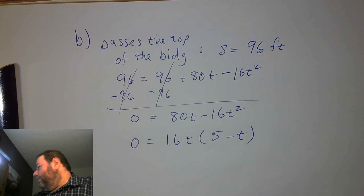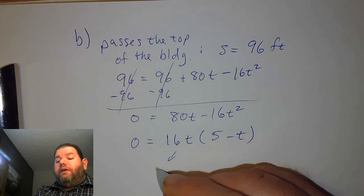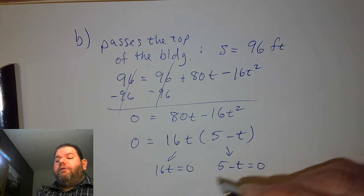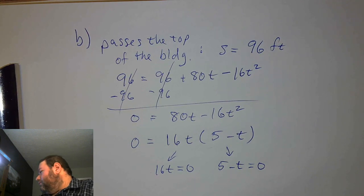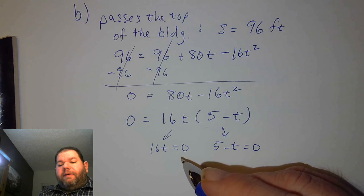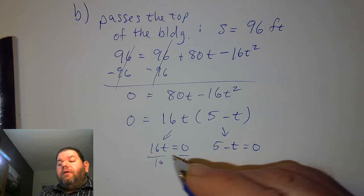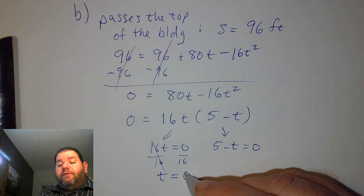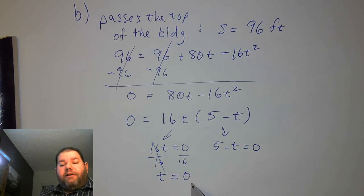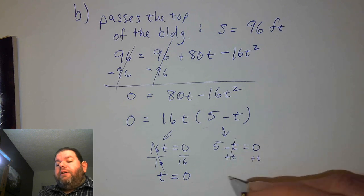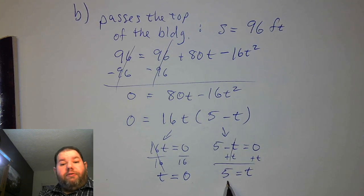In our current situation, we do have a t on the outside. So we can say 16t equals 0, or 5 minus t equals 0. For 16t equals 0, dividing both sides by 16 gives t equals 0. And adding t to both sides of 5 minus t equals 0 gives t equals 5 seconds.